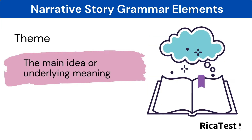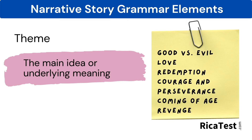The theme of a story is the main idea or underlying meaning of a writer and what they explore in the novel. Common examples include good versus evil, love, redemption, courage, perseverance, coming of age, and revenge.